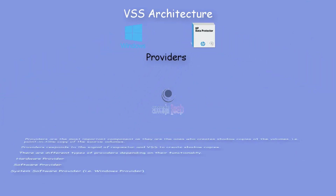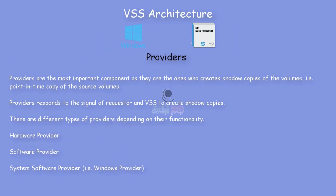The Provider is the last component in the VSS architecture but the most important one. Providers are the ones who create shadow copies of the volumes — that is, point-in-time copies of the source volumes. Providers respond to signals from the Requester and VSS to create shadow copies. There are different types of providers depending on their functionality: hardware provider, software provider, or system software provider (the Windows provider). Providers are critical because they talk directly to the hardware and storage at the storage level, and with the file system, in order to create shadow copies of the data.